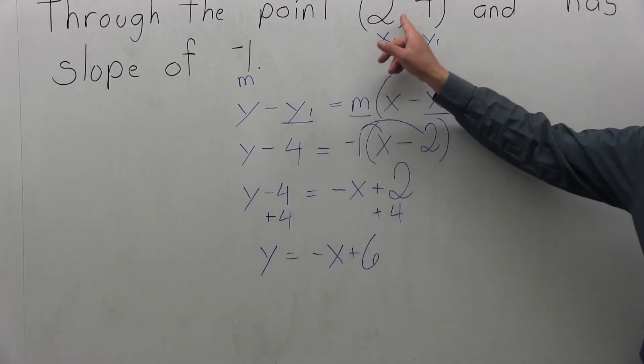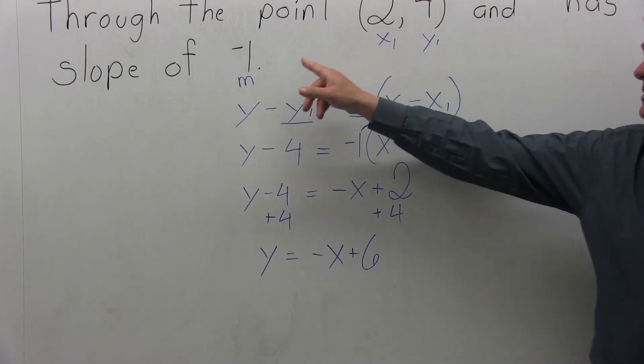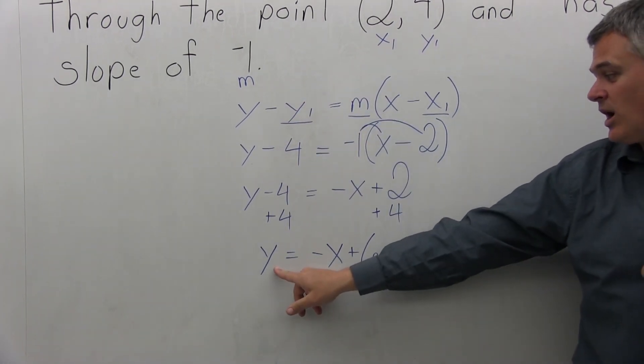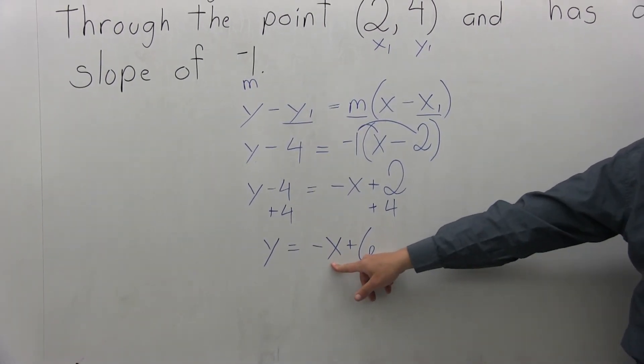The equation of the line that passes through the point (2,4) and has a slope of negative 1 is y equals negative x plus 6.